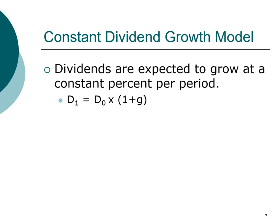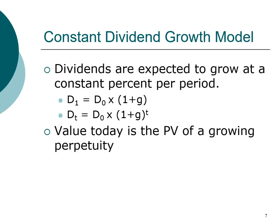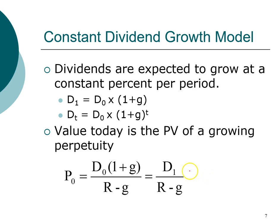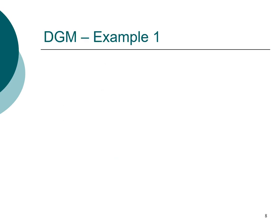The value of the stock today is the value of a growing perpetuity. Remember: the value of a growing perpetuity today equals dividend in year one divided by the required return minus the growth rate. If we don't have D1 directly, we can estimate it because dividend in year one equals dividend in year zero times (1 + growth rate).